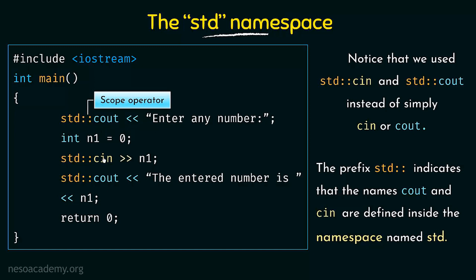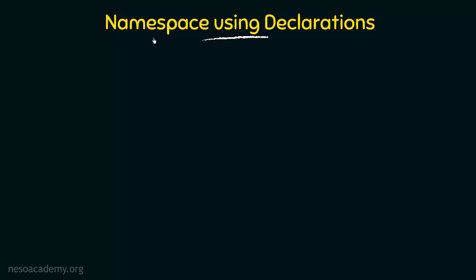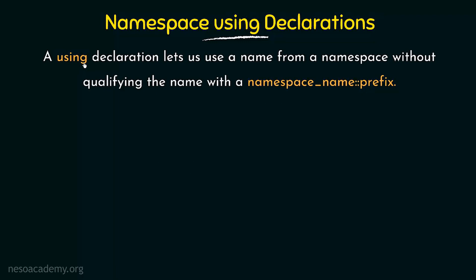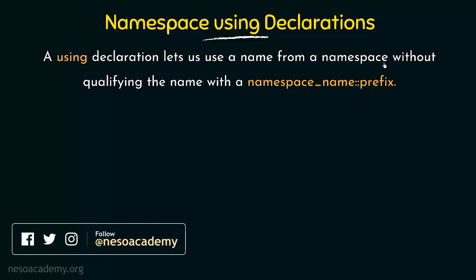The problem is that whenever we want to use something from the standard namespace, we have to explicitly mention it using std and the scope operator every time. We cannot simply write cout or cin. In order to avoid that, we will look at namespace using declarations. A using declaration lets us use a name from a namespace without qualifying it with the namespace name and scope operator prefix each time.